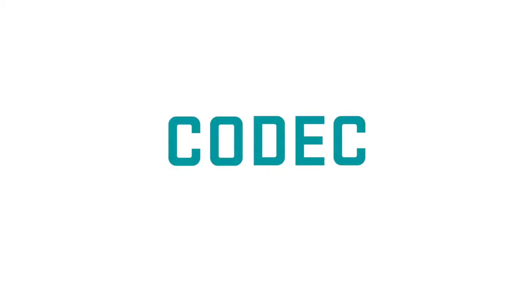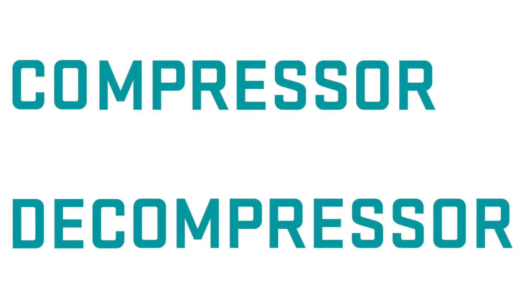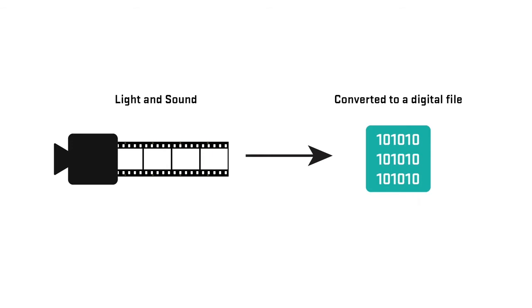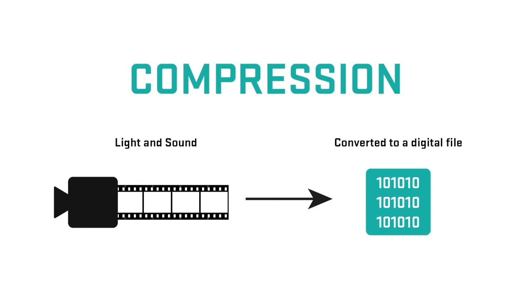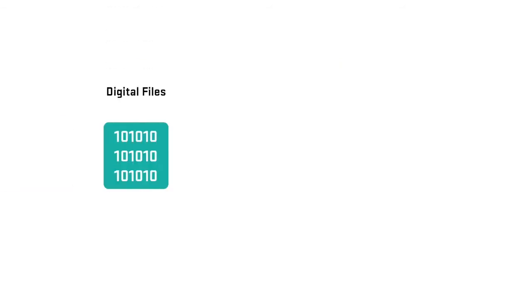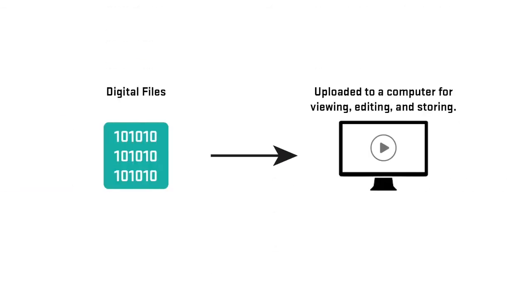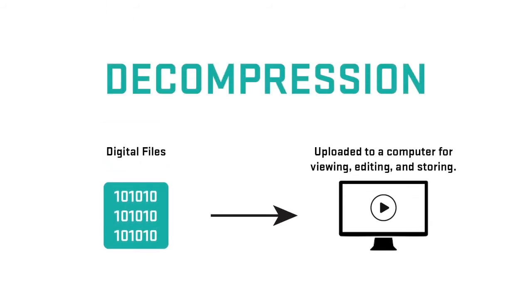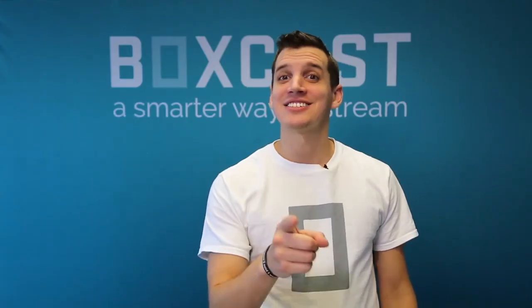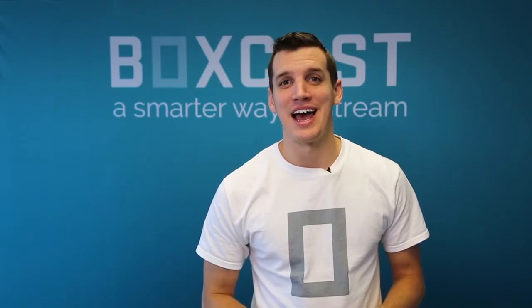Codecs. HEVC and AVC are called codecs. Codec stands for Compressor Decompressor. To put it simply, a codec takes light and sound from your camera and turns it into a digital format that a computer can read — this is known as compression. Then eventually, our computers read it and play it back to us the way it was originally captured, which is known as decompression. And that's how you're watching this video right now.